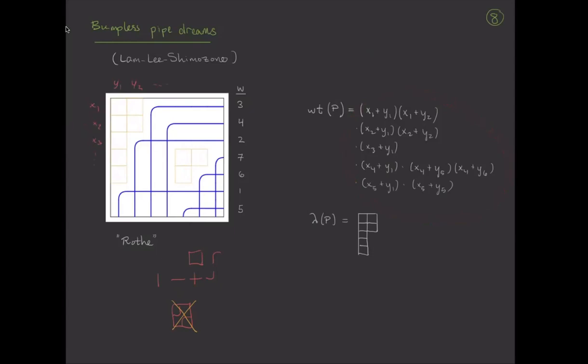So this is a formula first stated in Lamley-Shimazono's paper, but there's a wonderful proof by Anna Wiegand using transition, which makes the whole thing very simple. But the theorem is that the Schubert polynomial is the sum over all bumpless pipe dreams for a given permutation of the weight of the pipe or the weight of the diagram.